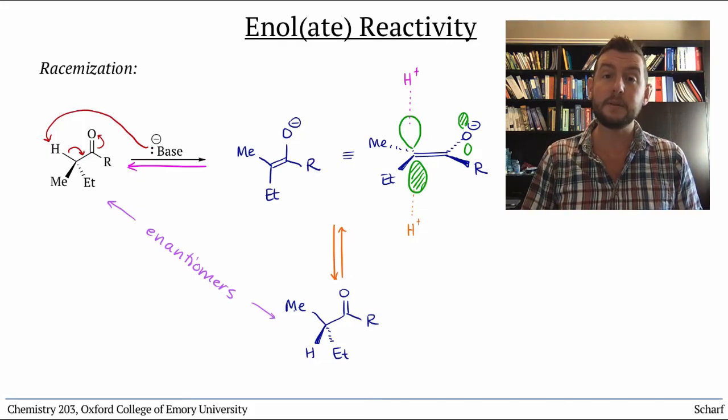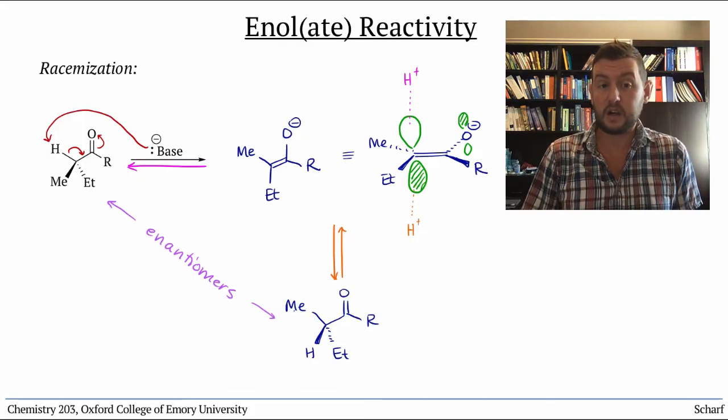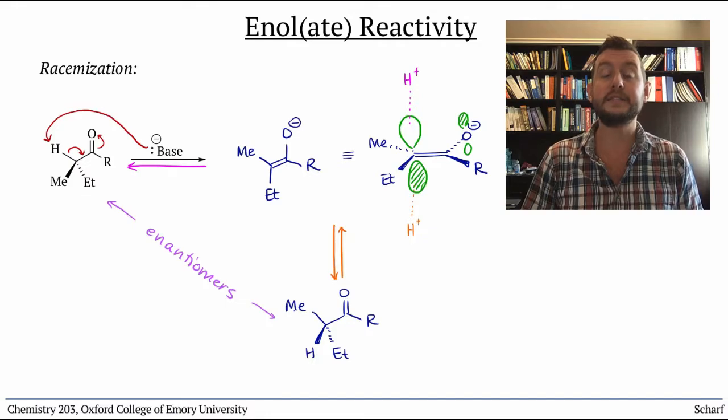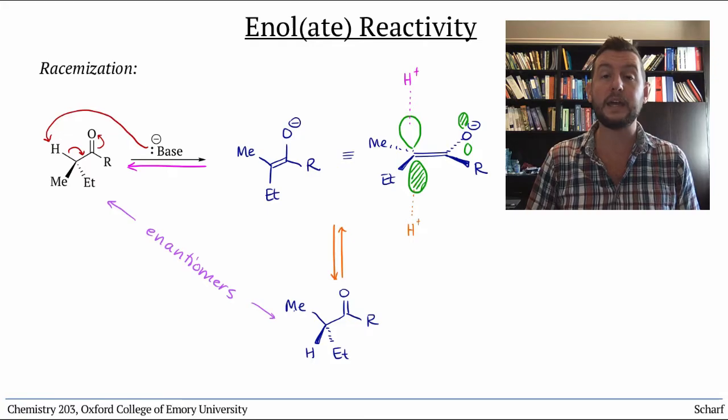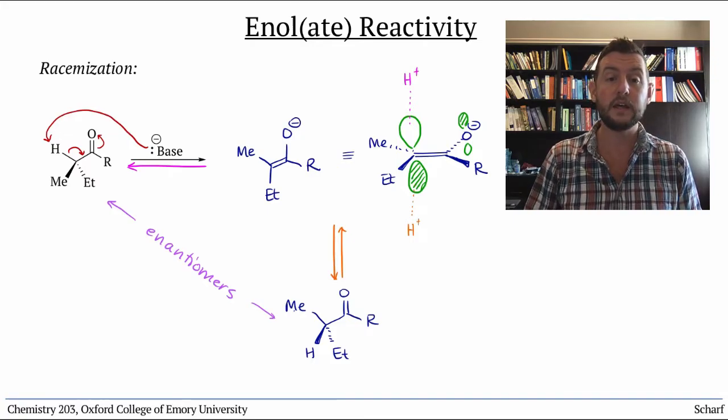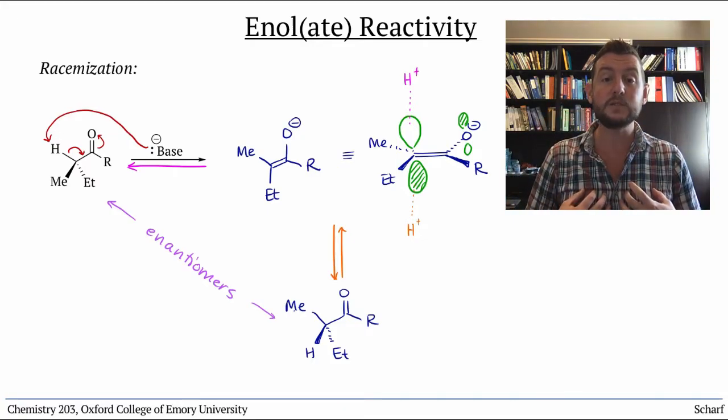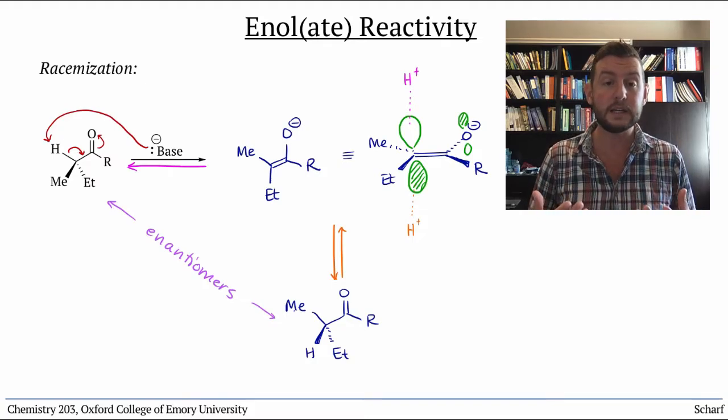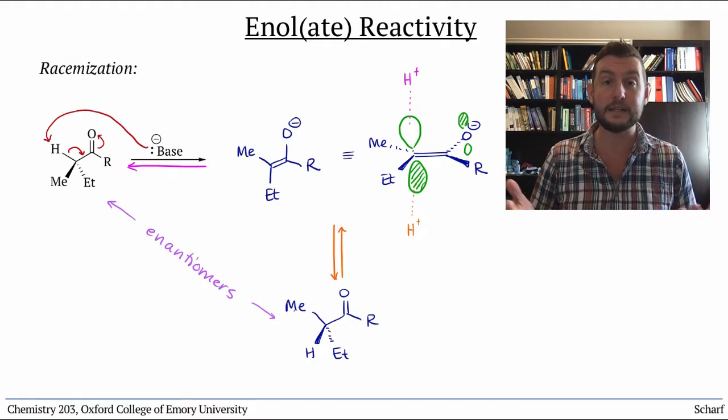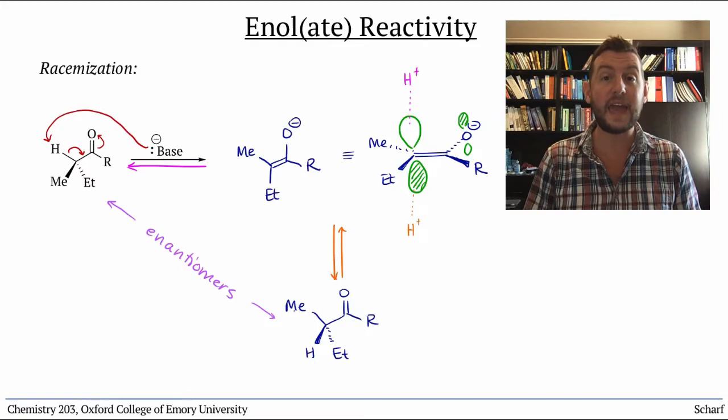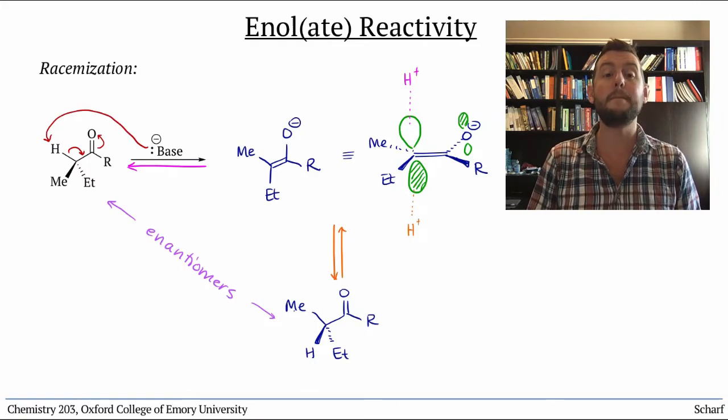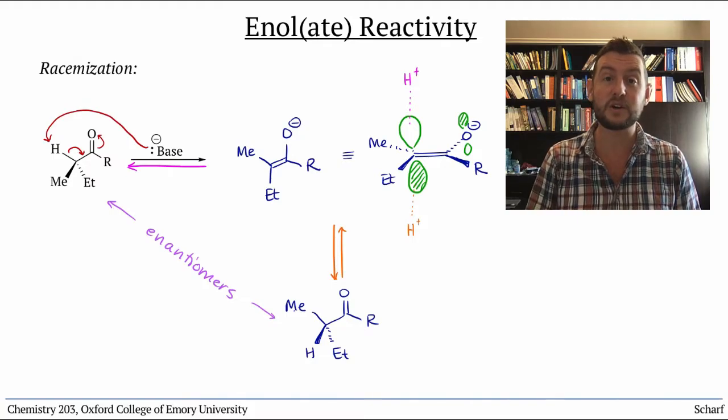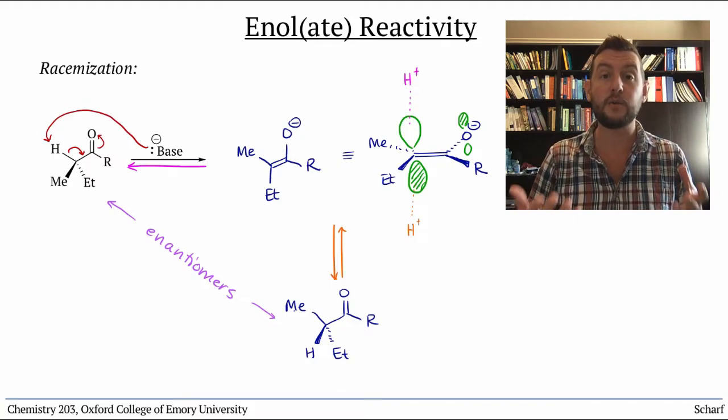An example of this racemization is with drugs. Drug molecules that have stereocenters alpha to a carbonyl group can be made and packaged as pure enantiomers. But as soon as they enter our bodies, where lots of acids and bases are present, they rapidly racemize. This means that the FDA review process of drugs like this must show that both enantiomers are safe, regardless of how the drug is sold.